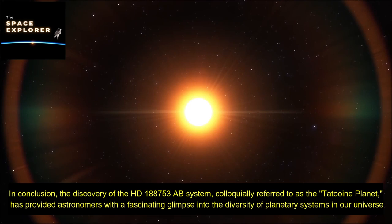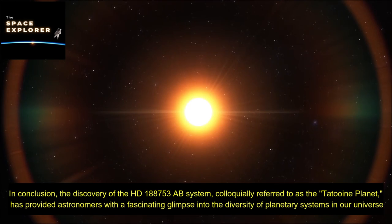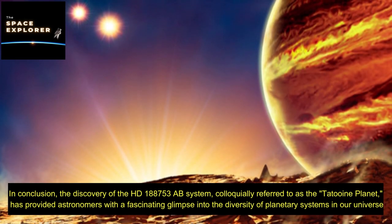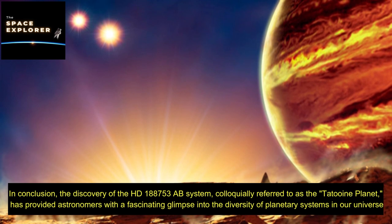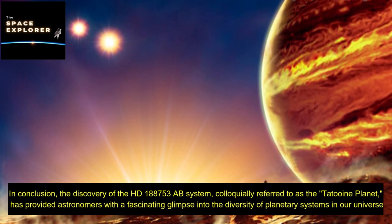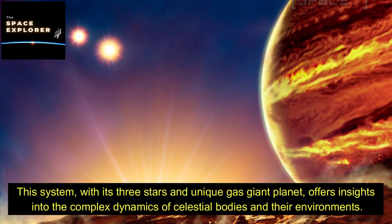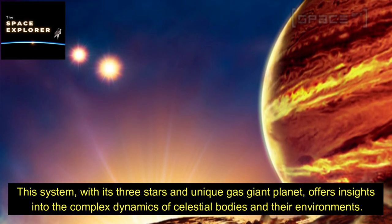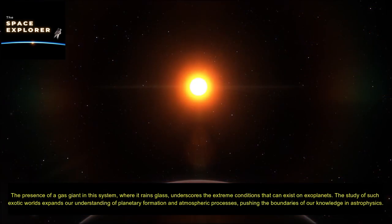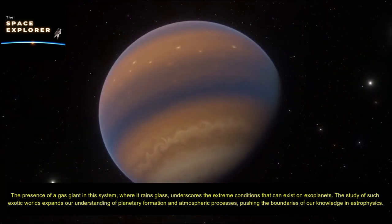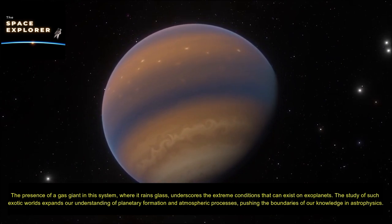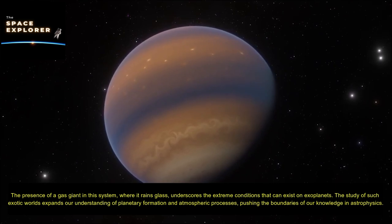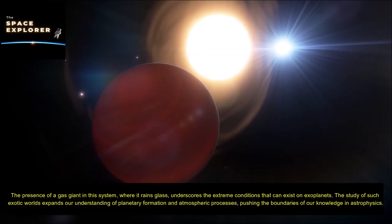In conclusion, the discovery of the HD 188753 AB system, colloquially referred to as the Tatooine planet, has provided astronomers with a fascinating glimpse into the diversity of planetary systems in our universe. This system, with its three stars and unique gas giant planet, offers insights into the complex dynamics of celestial bodies and their environments. The presence of a gas giant in this system, where it rains glass, underscores the extreme conditions that can exist on exoplanets. The study of such exotic worlds expands our understanding of planetary formation and atmospheric processes, pushing the boundaries of our knowledge in astrophysics.